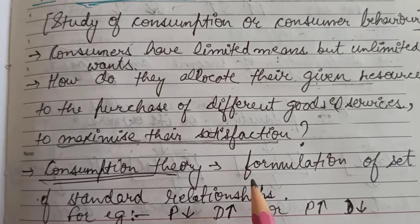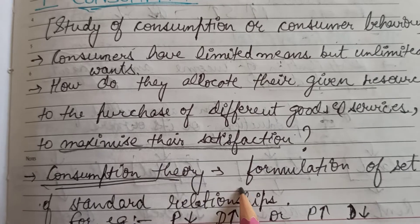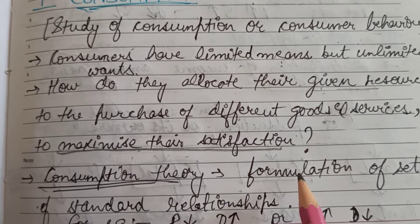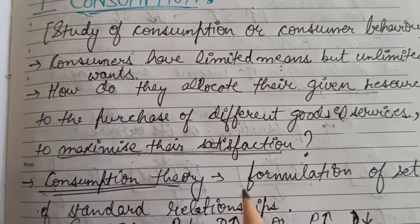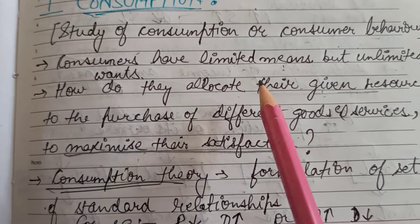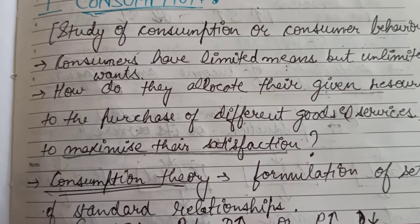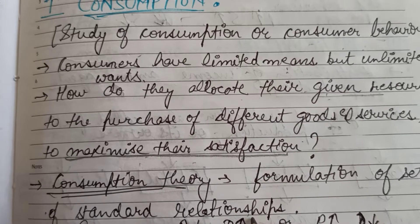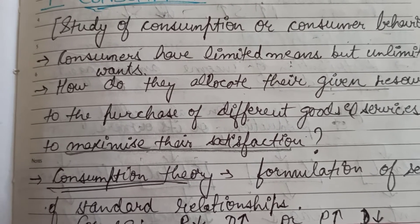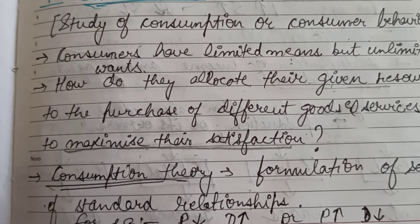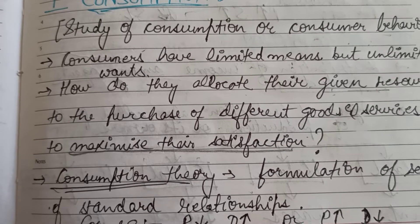Now what is consumption theory? Consumption theory basically refers to the formulation of a set of standard relationships. In further study, when we study how consumers allocate their resources, we get to know about various relationships between various variables. For example, a common example from microeconomics: when prices decrease, the demand for that commodity increases.